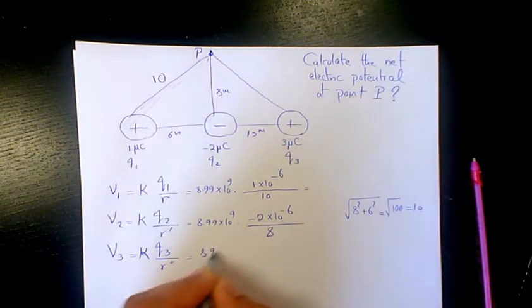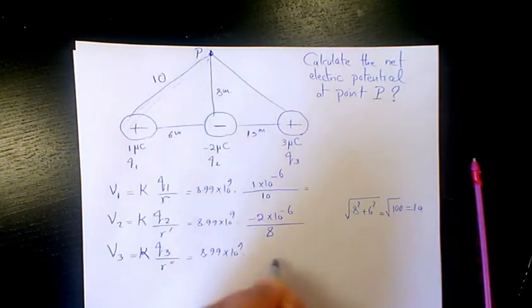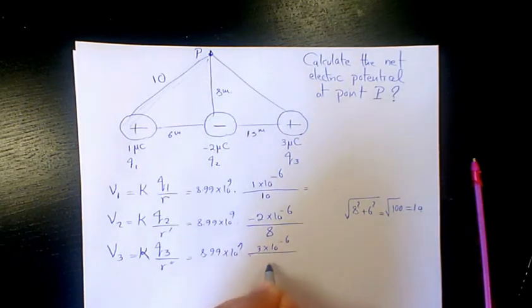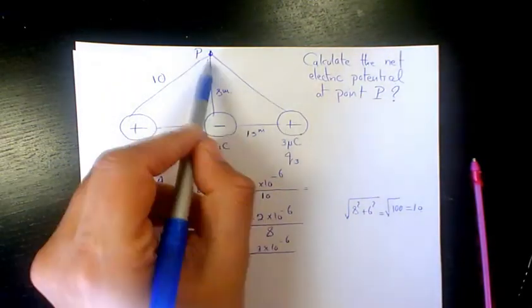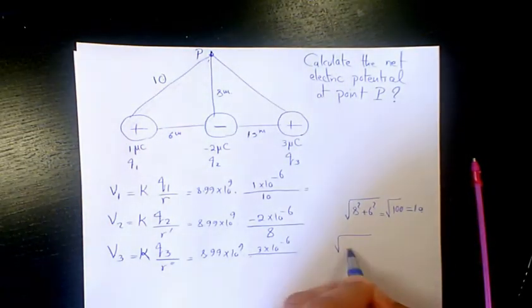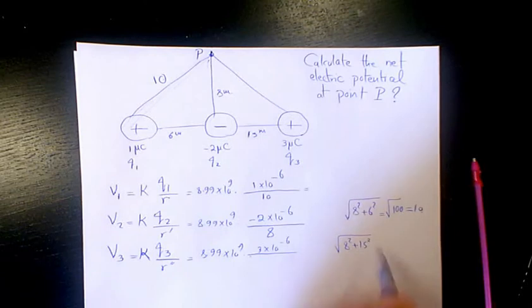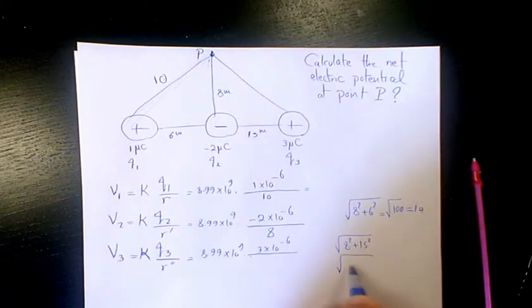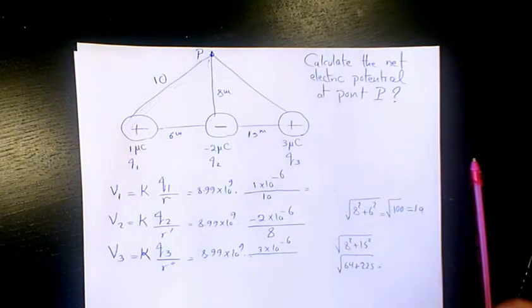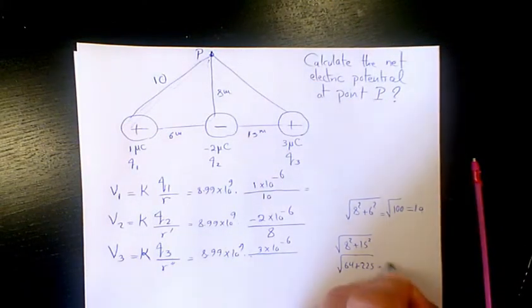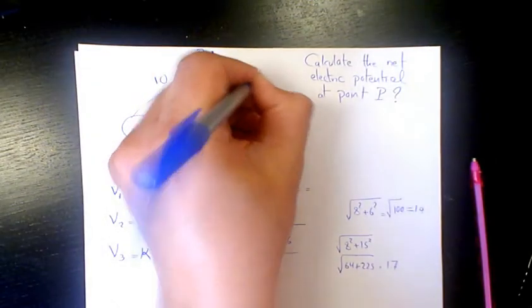And 8.99 times 10 to the power of 9, times 3 times 10 to the power of negative 6, divided by the square root of 8 squared plus 15 squared. 8 squared is 64, 15 squared is 225, and the square root of 64 plus 225 equals 17. So R double prime is 17.